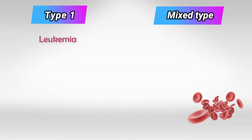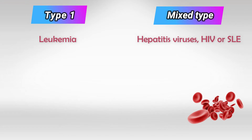Type 1 is caused by leukemia, and mixed cryoglobinemia is caused by hepatitis viruses, HIV viruses, or SLE.